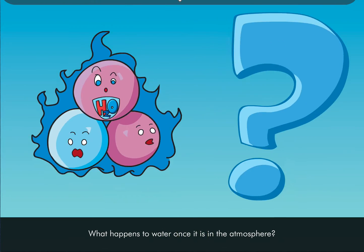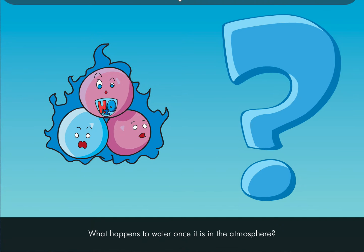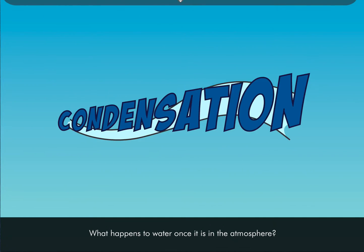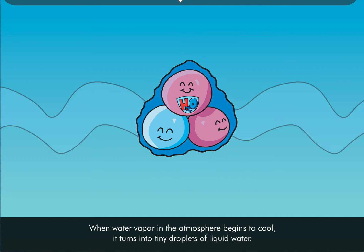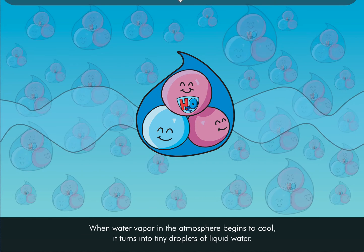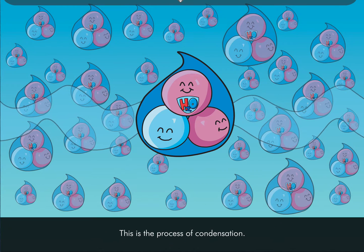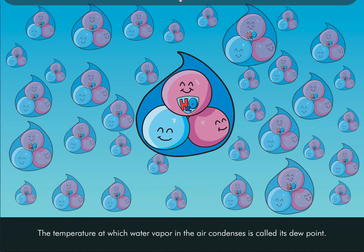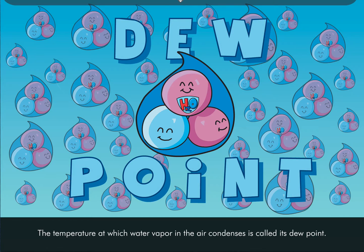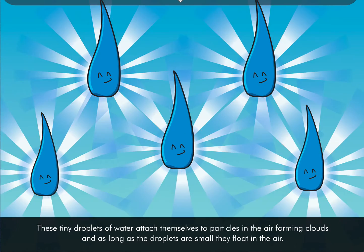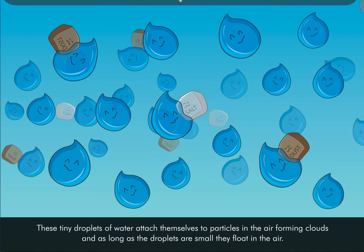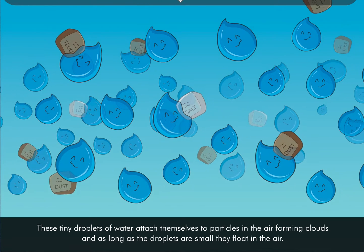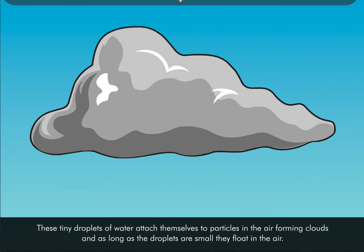Now you might be wondering: what happens to water once it's in the atmosphere? Condensation! When water vapor in the atmosphere begins to cool, it turns into tiny droplets of liquid water. This is the process of condensation. The temperature at which water vapor in the air condenses is called its dew point. These tiny droplets of water attach themselves to particles in the air, forming clouds. And as long as the droplets are small, they float in the air.